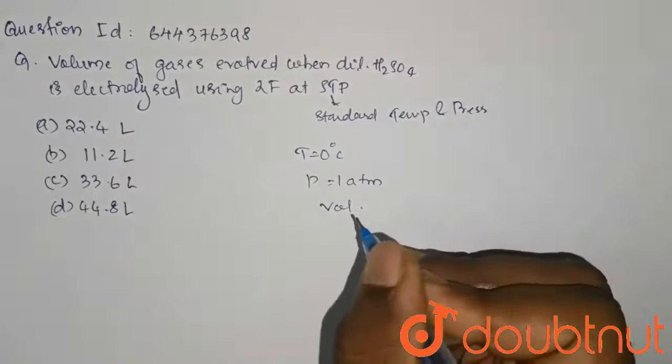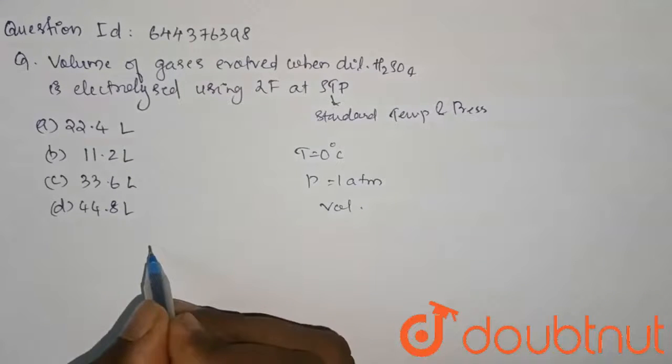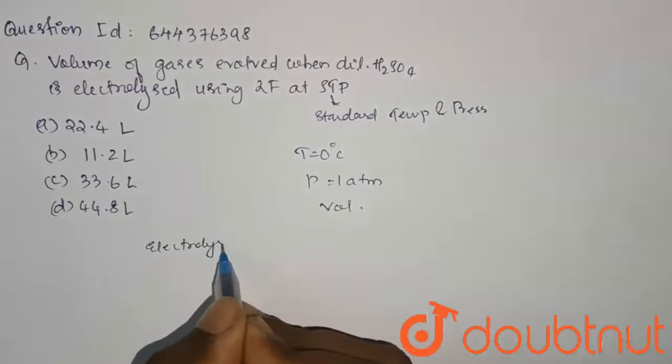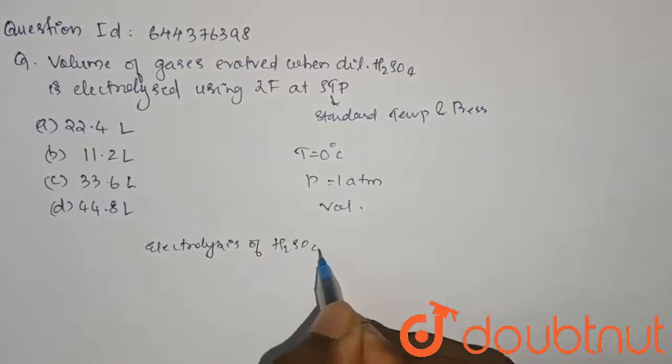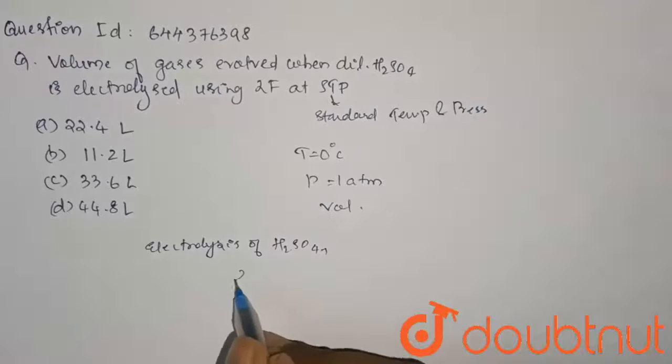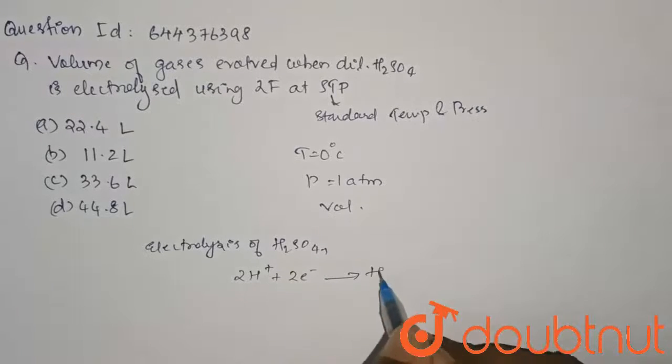Let's check out the electrolysis of H2SO4. It is as follows: 2H+ plus 2e- gives H2.